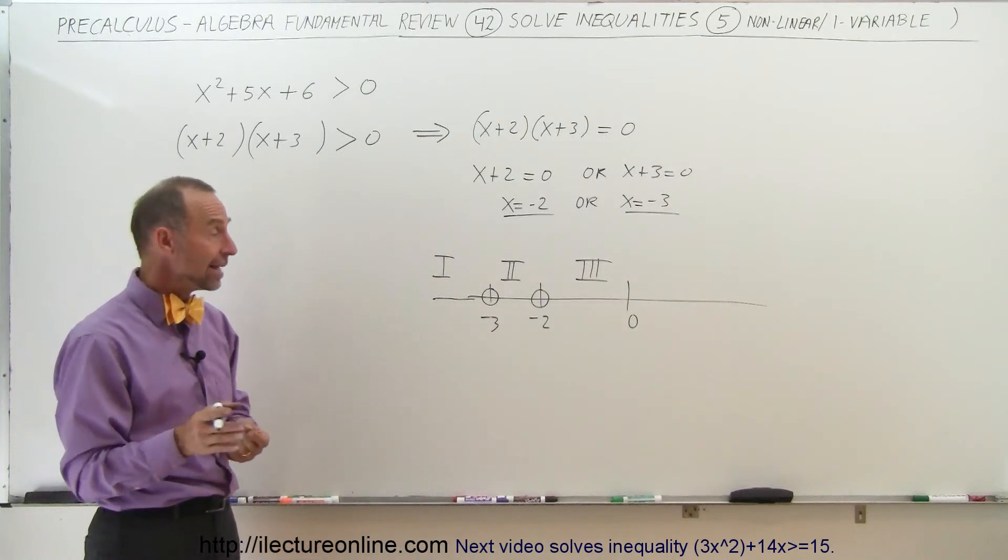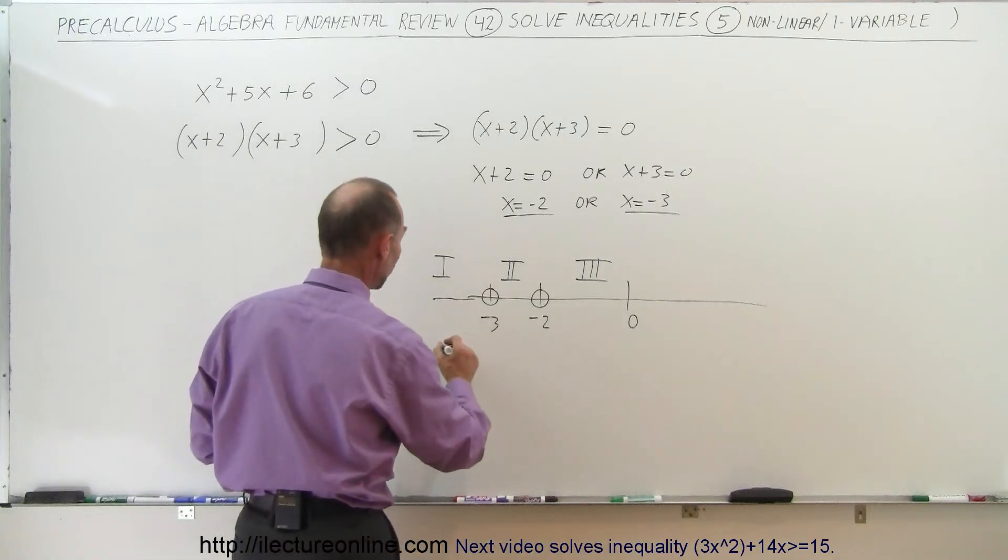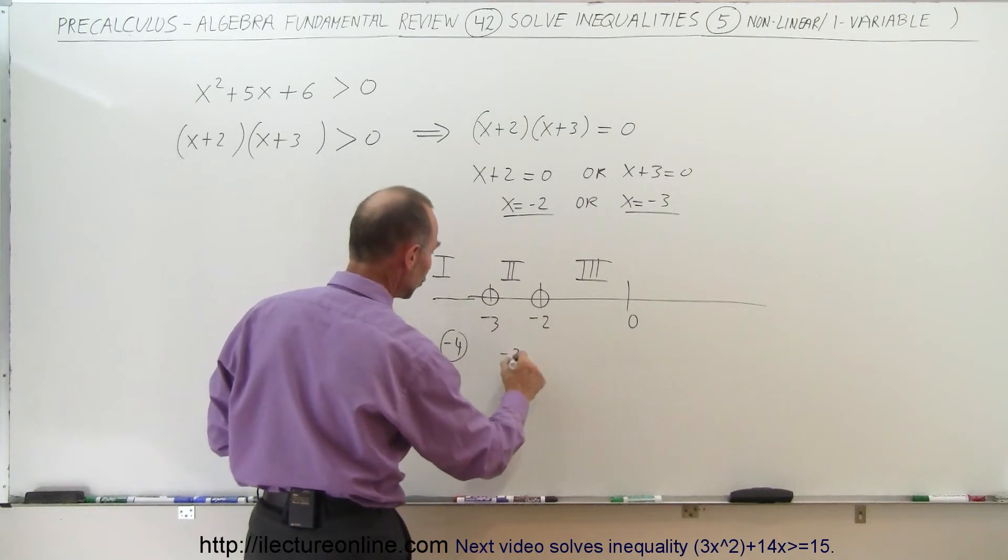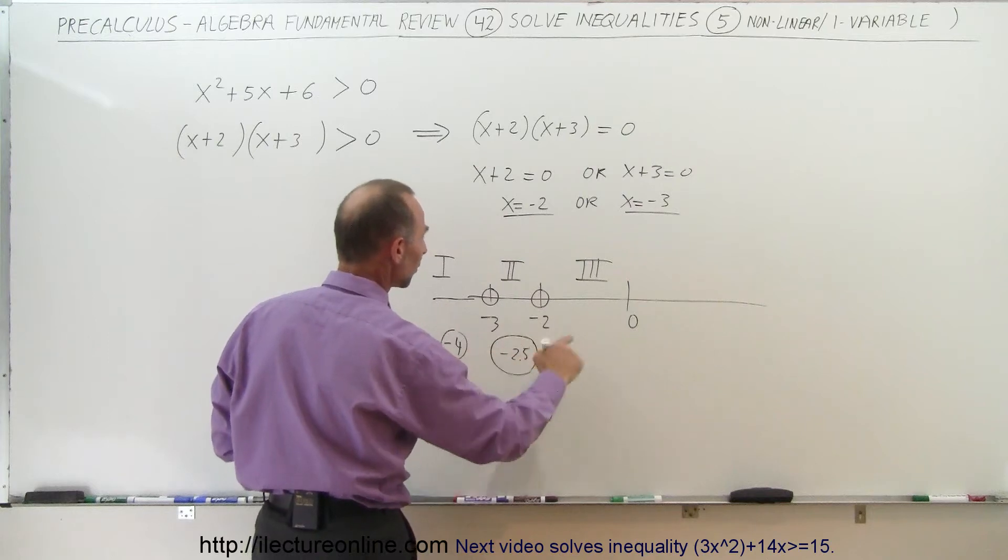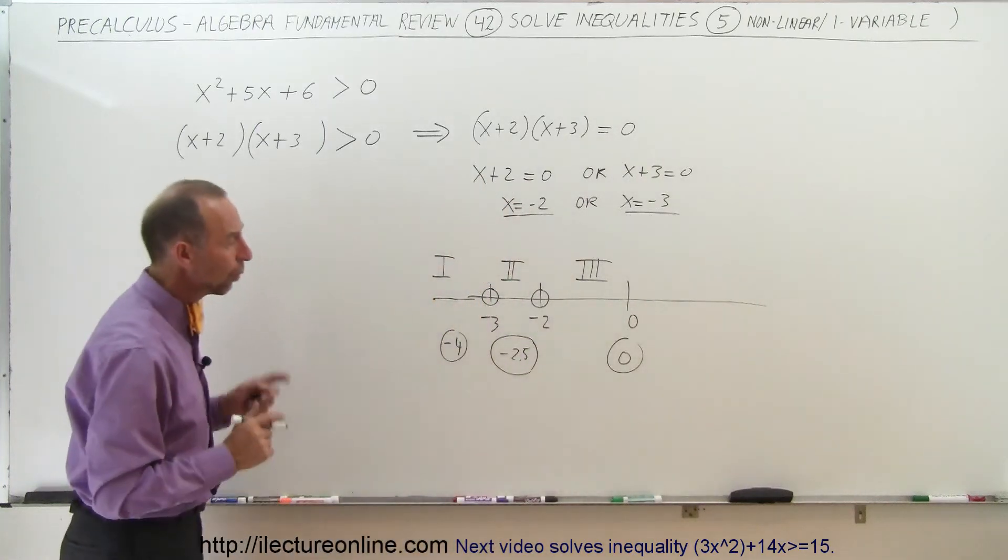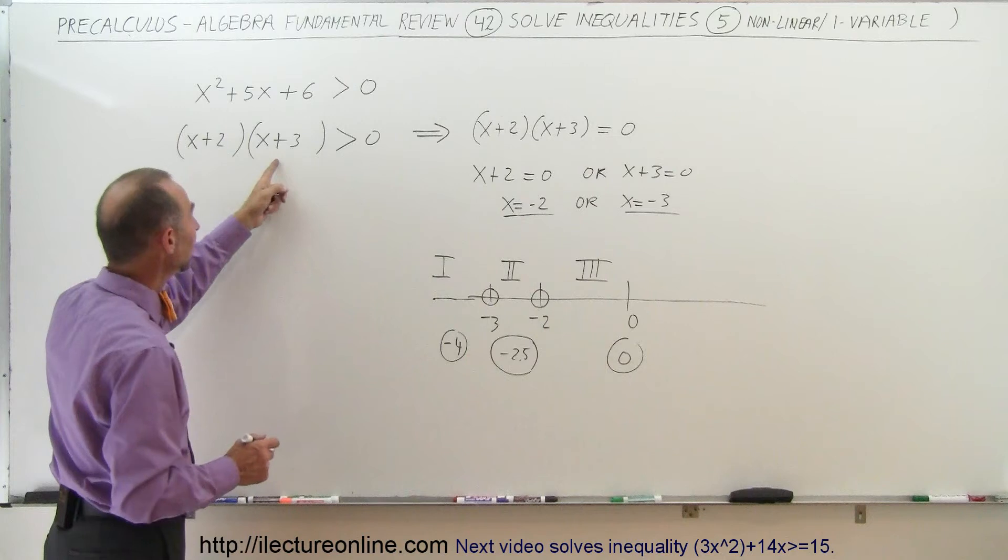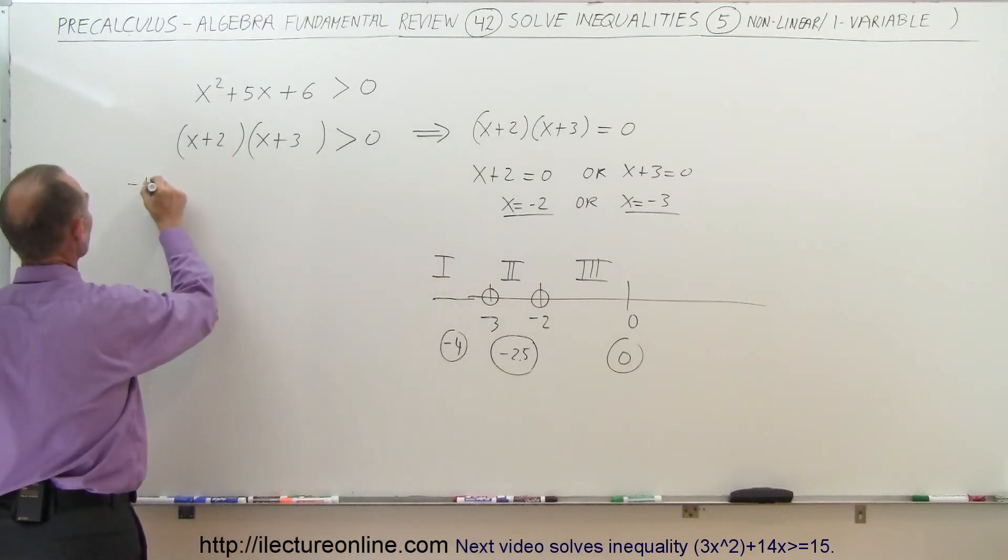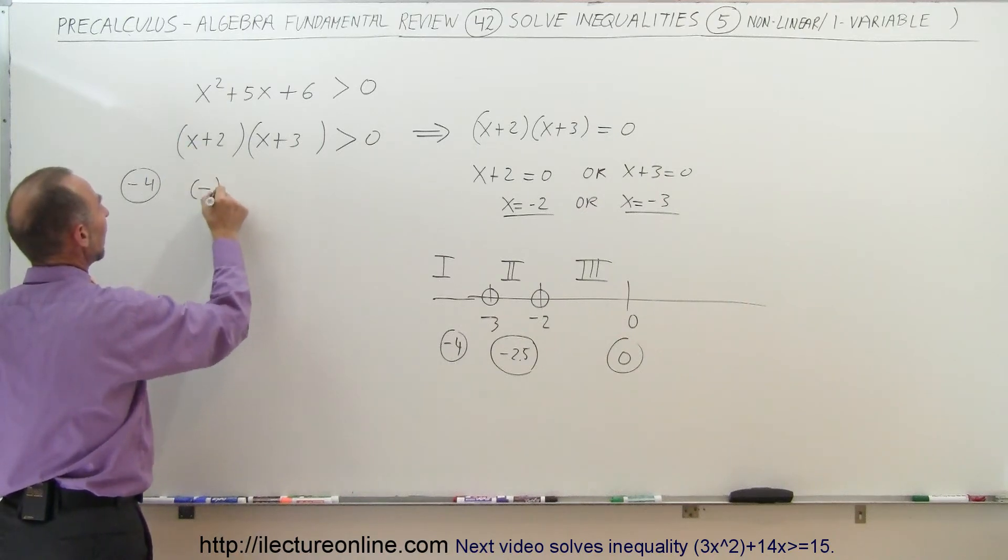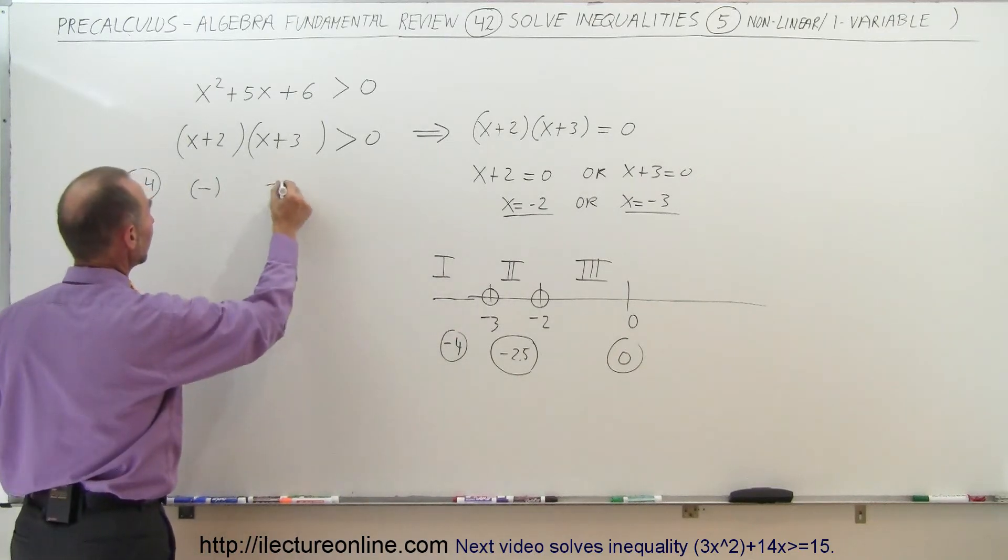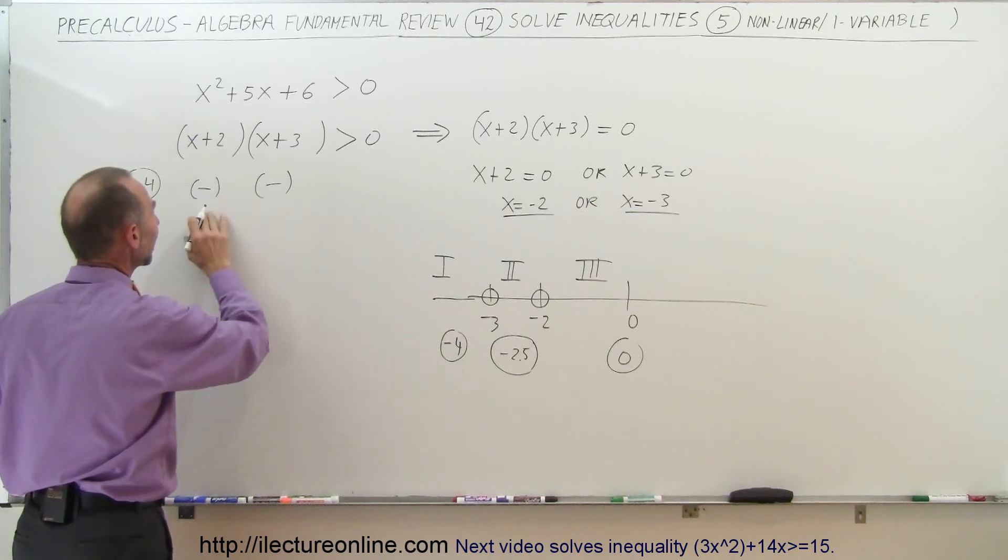Let's see here. We can do that by finding some test points. A test point in region number one may be like negative 4. A test point in region number two is maybe negative 2.5 and a test point in region number three, whenever you can use the number zero, we'll take the number zero to represent any point in region number three. What we're going to do now is plug those into our inequality and see if that then causes that inequality to satisfy the condition that it's greater than zero. So starting with negative 4. If we plug a negative 4 into x, we have negative 4 plus 2 gives us a negative 2 which is a negative quantity. And if we plug a negative 4 in here, negative 4 plus 3, that's negative 1, that also will give us a negative quantity.